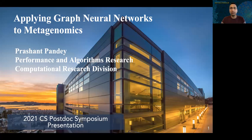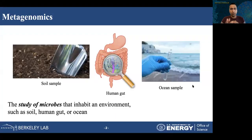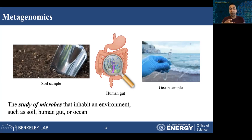Let's start by talking about metagenomics. Metagenomics is a study of the microbes that inhabit an environment. This environment can be a soil environment where we take a soil sample and study the interactions between different types of bacterial, archaeal, or viral species found in it, or it can be a human gut microbiome or even a marine life study from an ocean sample.